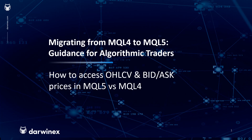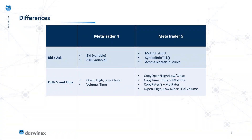We'll cover accessing price as OHLCV as well as bid and ask, as well as time, and what you need to do to migrate from MQL4 to MQL5. In MQL4 there are certain predefined variables that make it quite simple to access this data — predefined variables and arrays: bid and ask for bid/ask prices, and open, high, low, close, volume, and time.